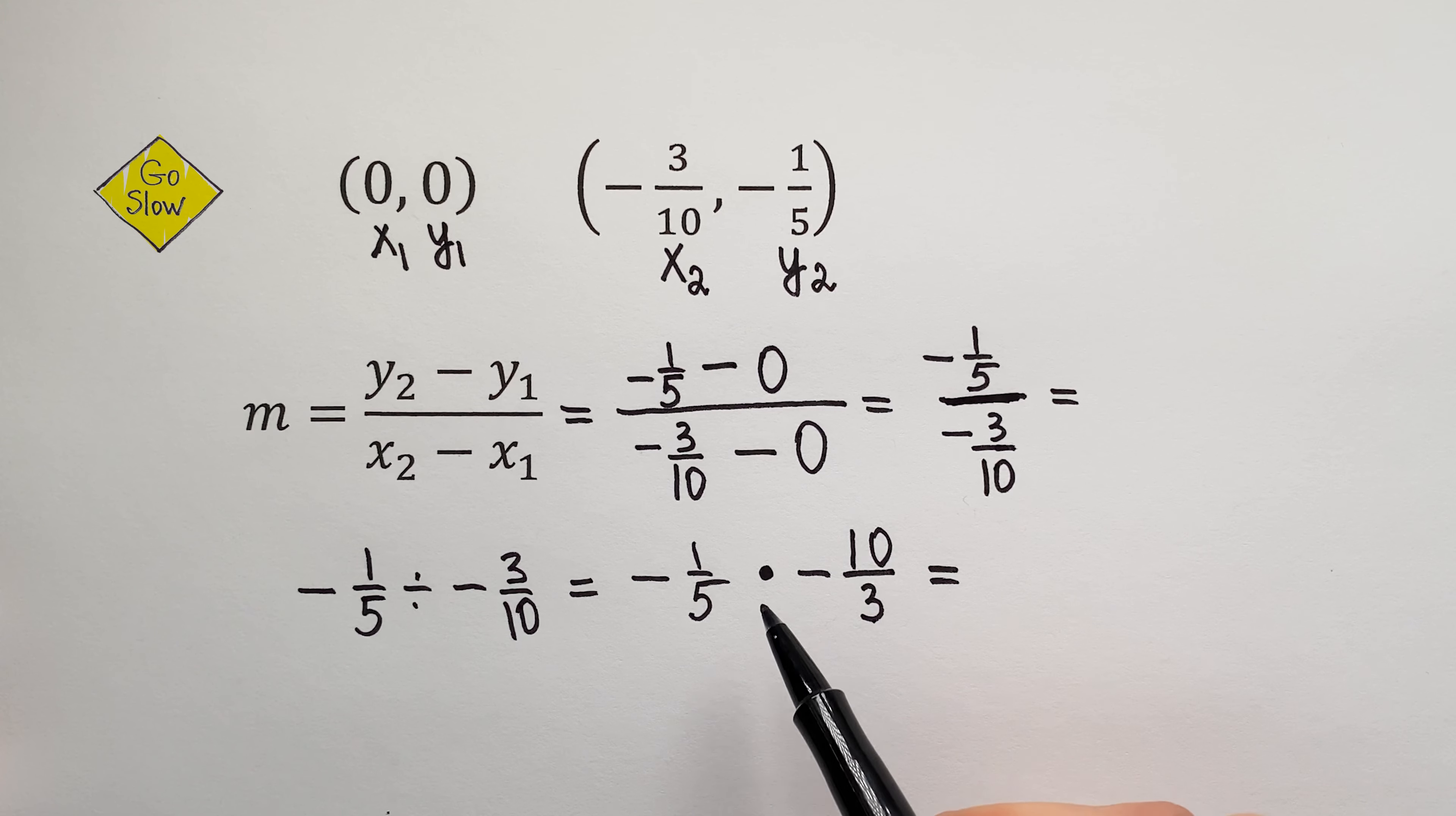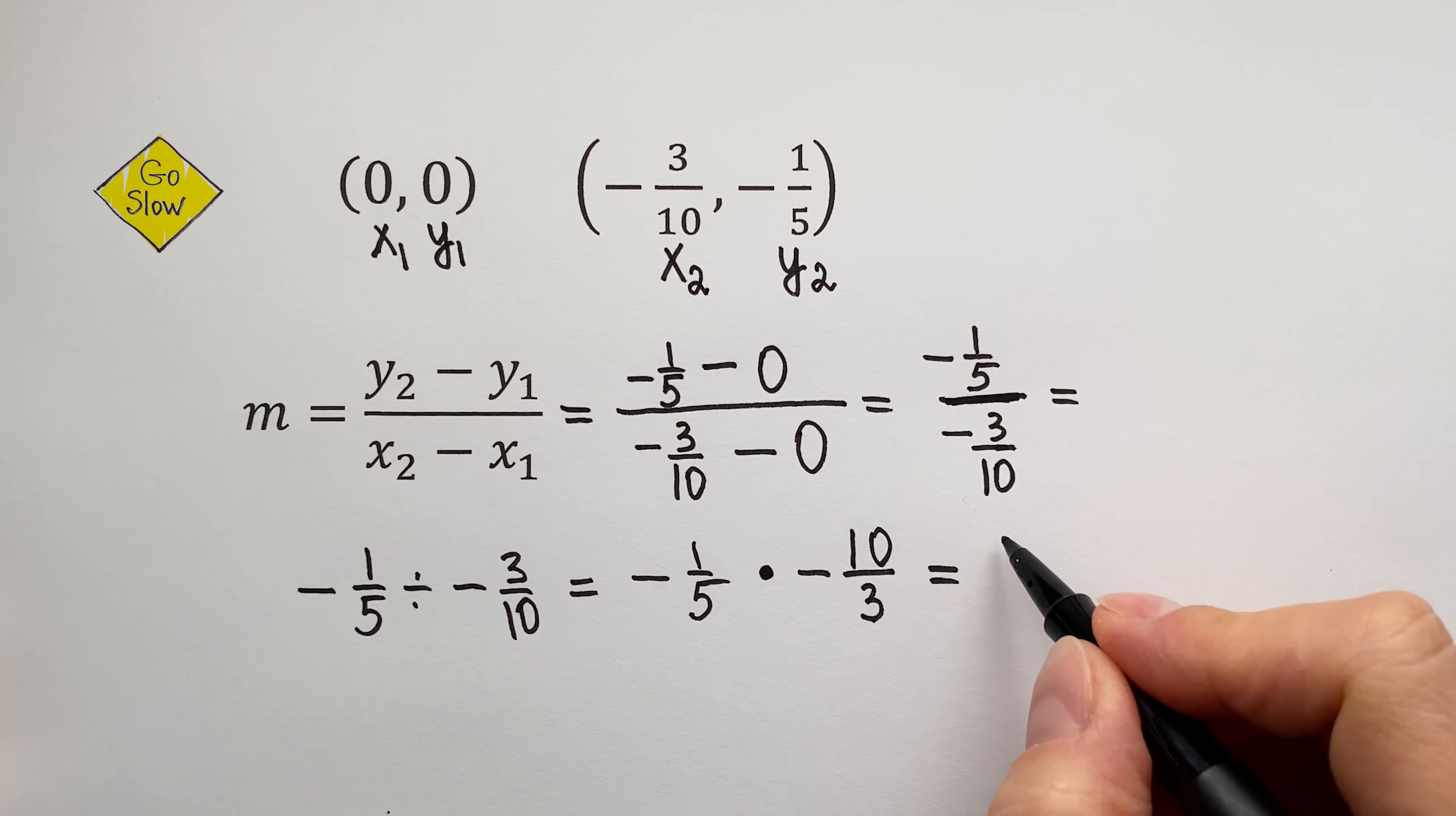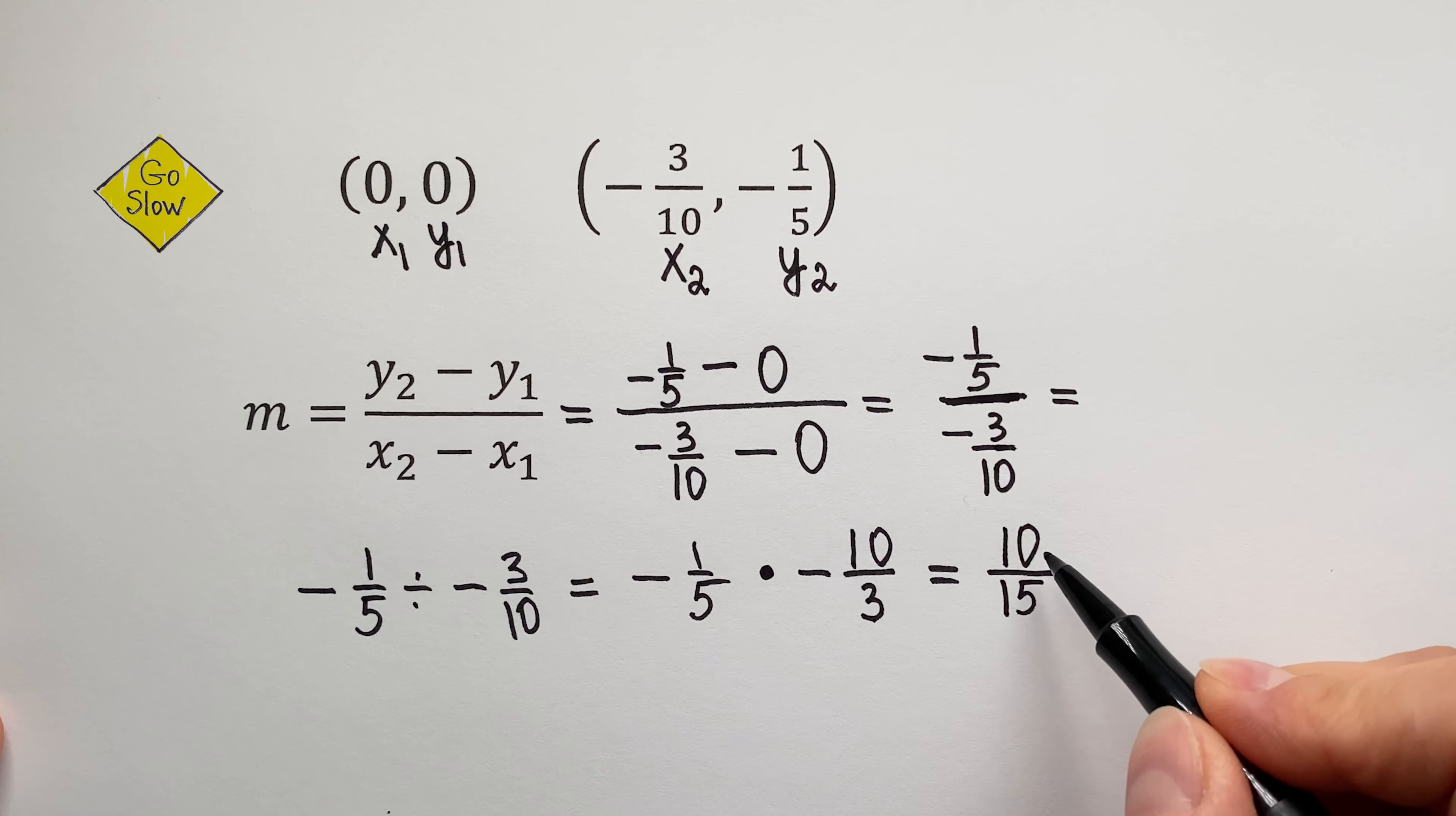now we are multiplying two fractions, and we have to deal with the signs. Let's do it! Negative times negative, the result is positive. So, when you multiply fractions, first multiply the numerators. 1 times 10 is 10. Then multiply the denominators. 5 times 3 is 15.